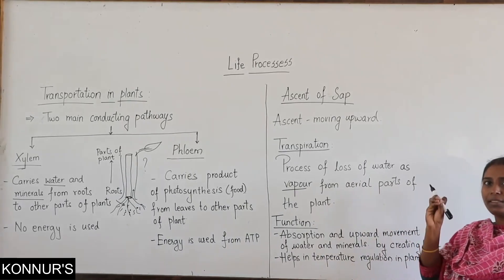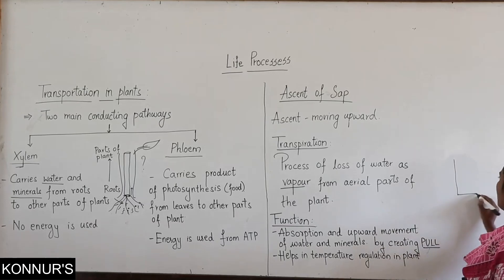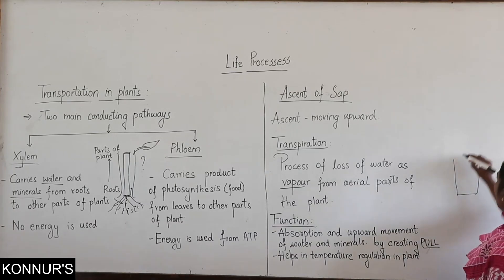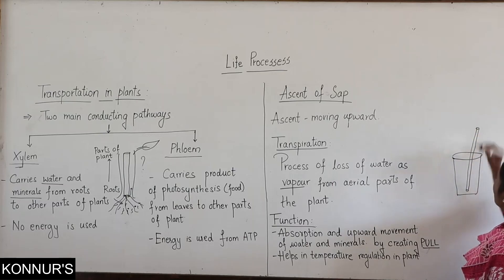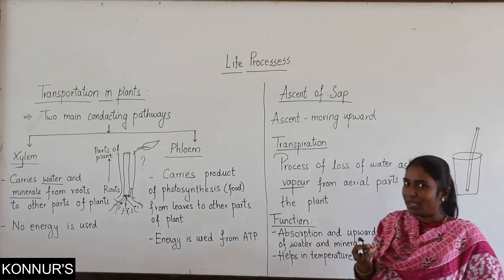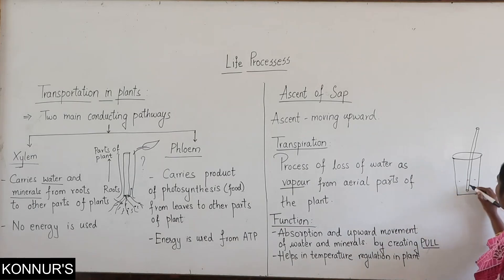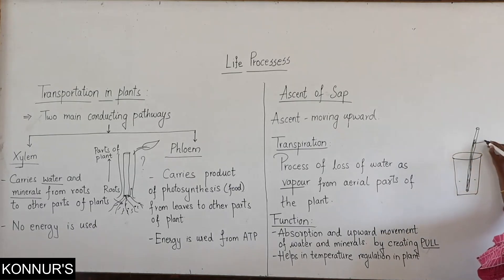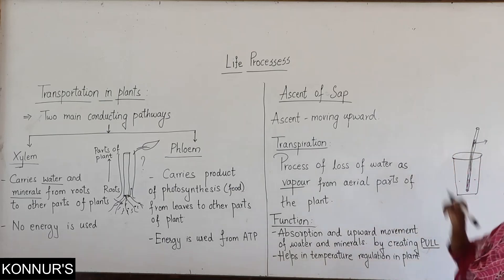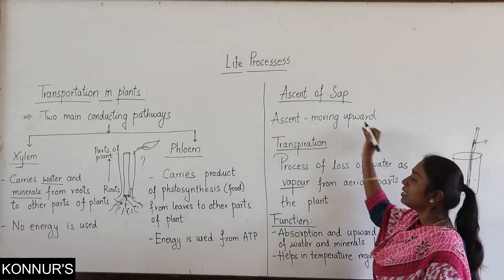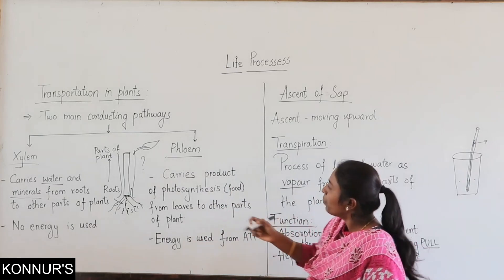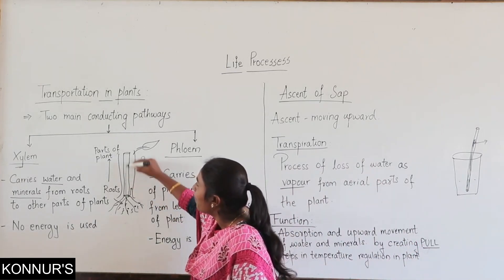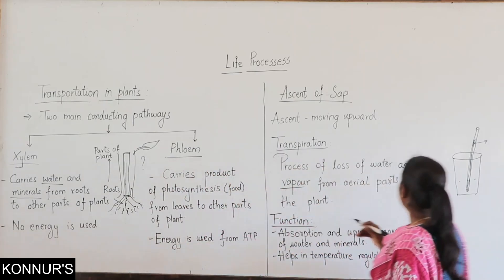Let me make this clearer. Whenever you are drinking juice in a glass, you are provided with a straw. You put the straw in your mouth and suck it, and the liquid in the glass starts moving upward. This moving upward of the liquid is just similar to the ascent of sap. The word ascent means moving upward. So what is it that brings the water molecules up in the plant?